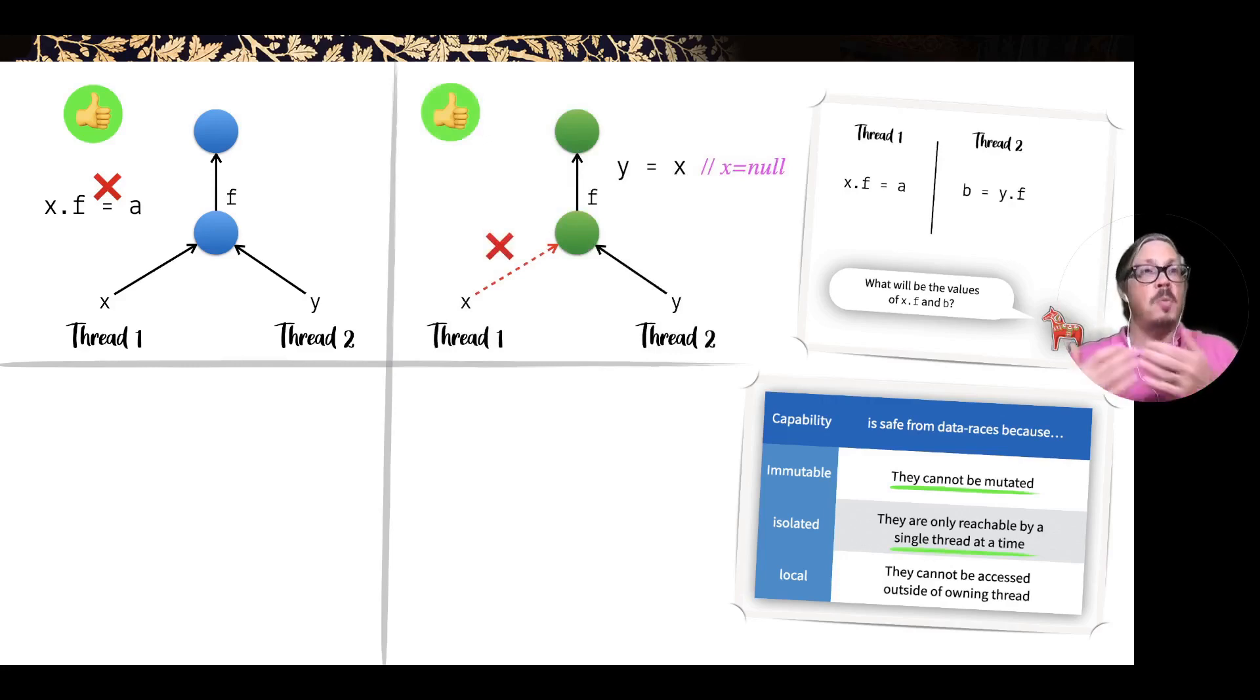If you have ISOs, then we transfer them across references, across variables. In this case, if I stored X and Y, then X gets nullified as a side effect, so I can't have X and Y being references pointing to the same object across different threads. By controlling the aliasing, we also control the possible sharing across threads. Only one thread at a time can know about the existence of this object, so you can't have a data race.